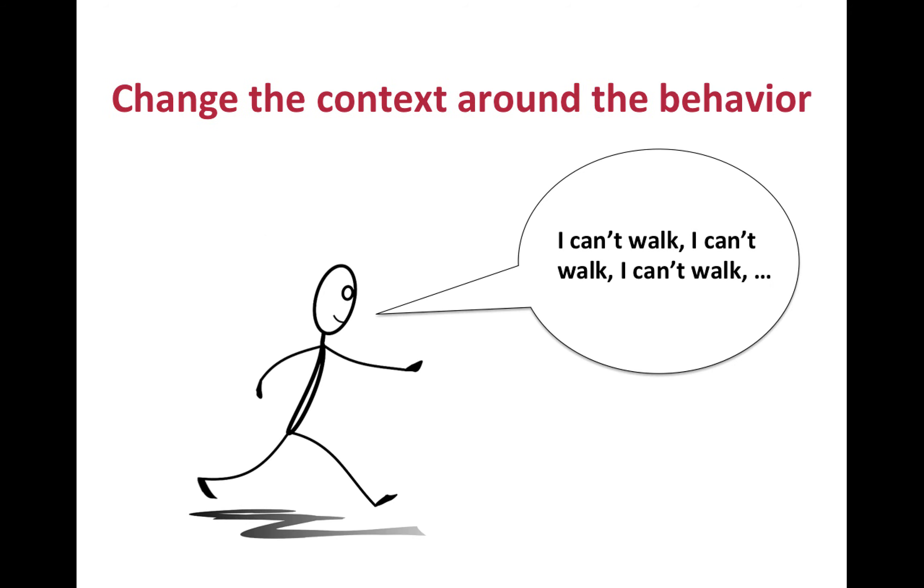The second main approach, changing the context around the behavior, consists of inviting a client to do something different, while the original source of influence remains the same. For example, a client could be invited to walk in circles while repeating out loud, I can't walk, I can't walk, I can't walk. Doing so would show that a response doesn't have to match the content of a thought. As a result, the thought would lose its impact on the response, and the response would become more flexible.